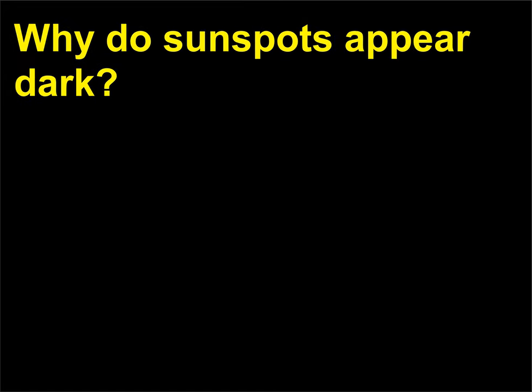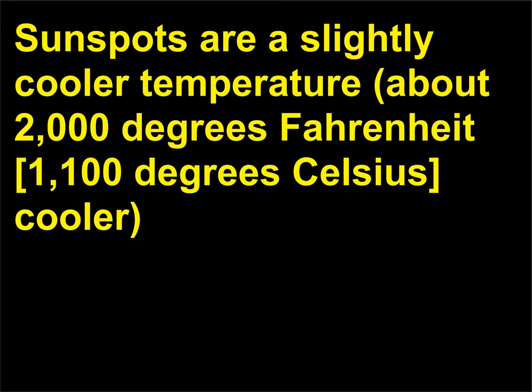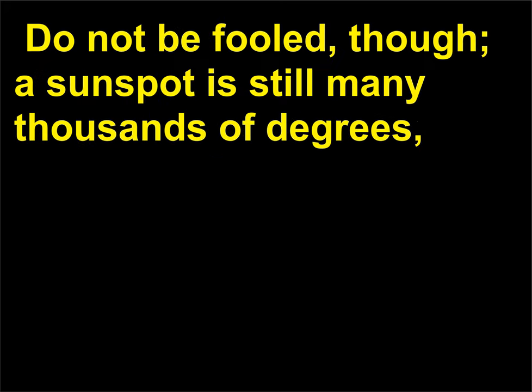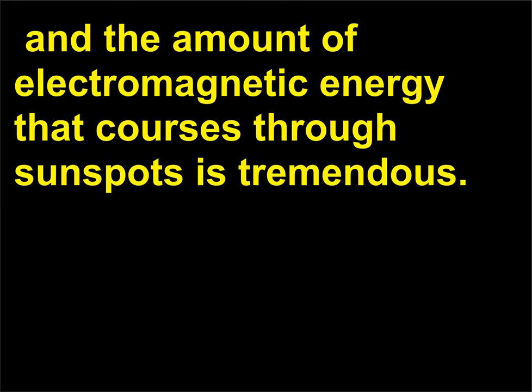Why do sunspots appear dark? Sunspots are at a slightly cooler temperature — about 2,000 degrees Fahrenheit (1,100 degrees Celsius) cooler than their surrounding photospheric gas — and so in the bright backlighting, sunspots appear dark. Do not be fooled, though: a sunspot is still many thousands of degrees, and the amount of electromagnetic energy that courses through sunspots is tremendous.